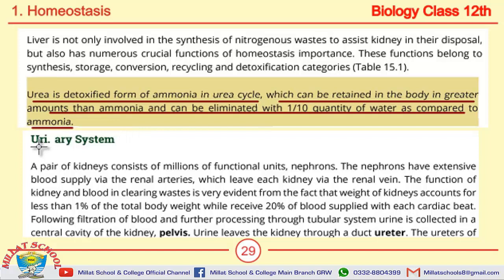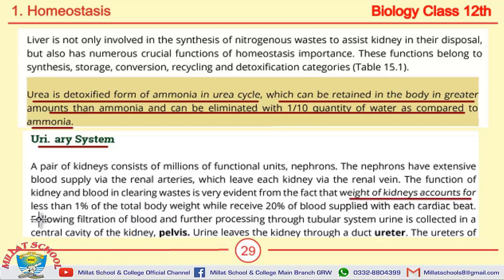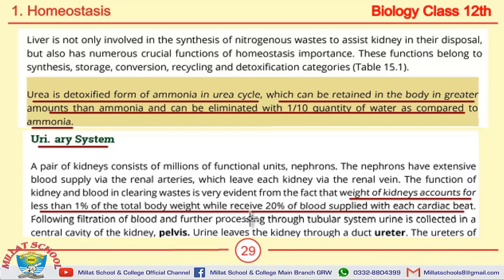Next is the urinary system of humans, which is a very important long question and MCQs may be selected from here. The weight of kidneys accounts for less than 1% of total body weight, while they receive 20% of the blood supplied with each cardiac beat. Urine leaves the kidney through a duct called the ureter.